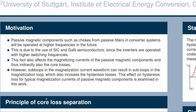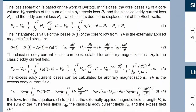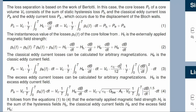First we have to understand the principle of loss separation. The core losses are the mean value of the instantaneous core losses multiplied by the volume of the core, and that is equal to the sum of the hysteresis losses, eddy current losses, and the microstructure eddy current losses, which occur due to the displacement of Bloch walls. These instantaneous core losses are a function of the speed of magnetization, or the change of flux density over time, dB/dt.